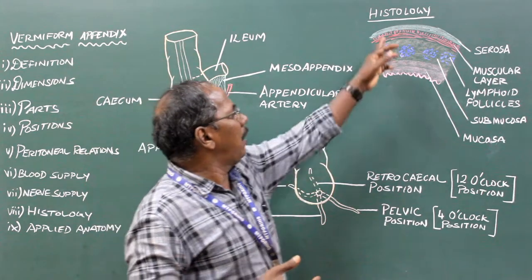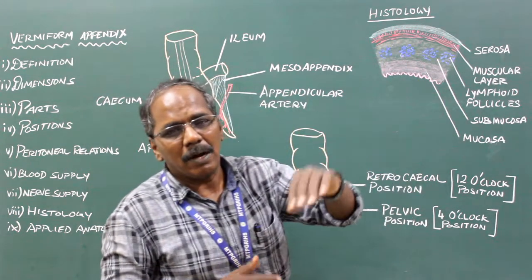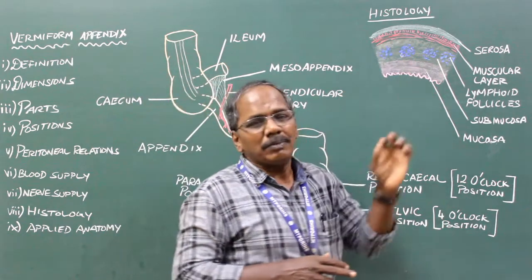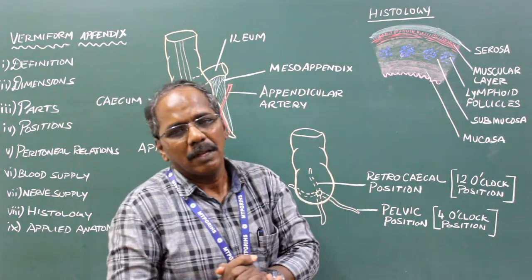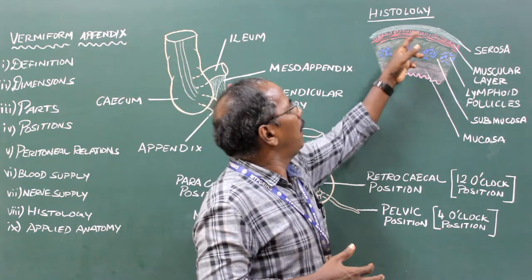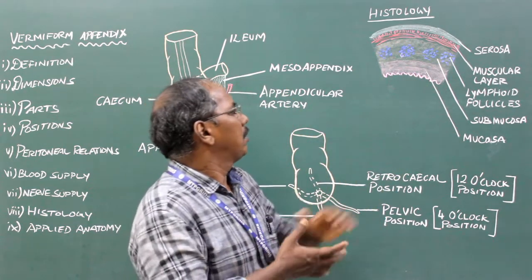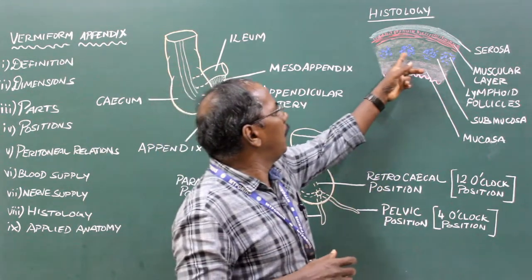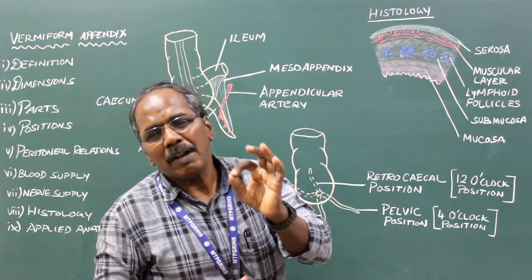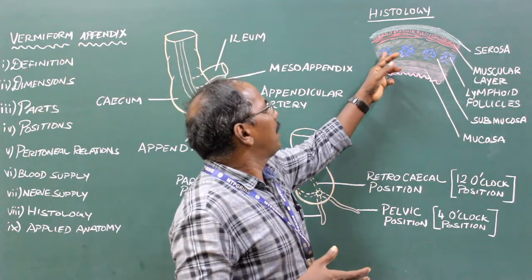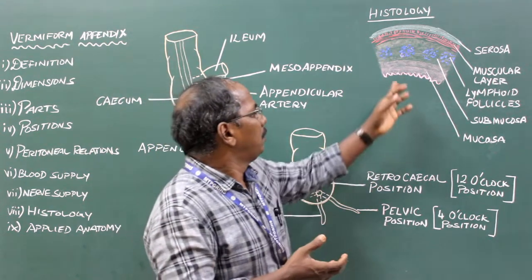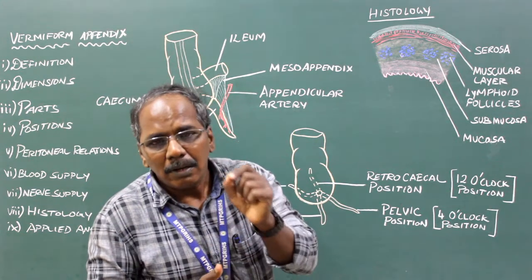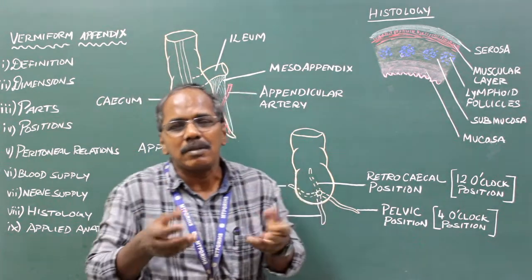The serous layer is the outermost layer, covered by the outer lining of peritoneum. The muscular layer is made up of smooth muscle fibers with both outer longitudinal and inner circular fibers. The submucosa contains a number of round lymphatic nodules or lymphatic follicles with a germinal center. The mucosa is lined by simple columnar epithelial cells and numerous goblet cells.